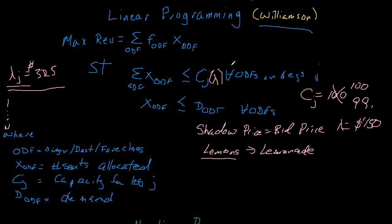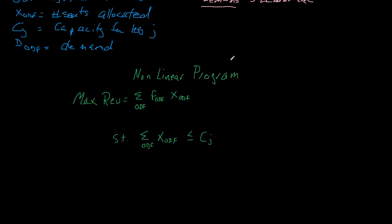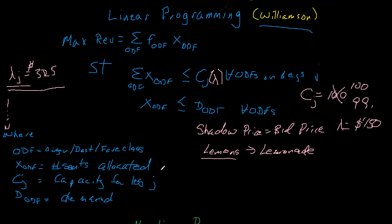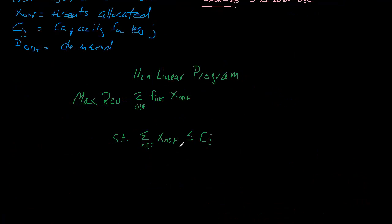So I wrote down here, so here's my nonlinear program. And so far what I've done is I've just written down the things that are in common to the linear program. So this is the same objective function and the same capacity constraints.